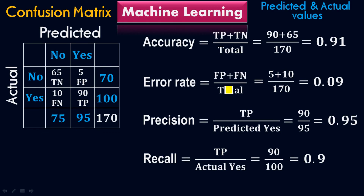These are very important terms of the machine learning model during final evaluation. When you create and train the model, at the end you need to check the accuracy rate, the error rate, the precision of the model, and the recall of the model. These are very important parameters, and all of them can be calculated with the help of the confusion matrix. That's why the confusion matrix is very important to analyze and check the final machine learning model.